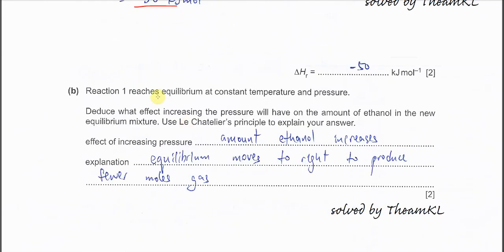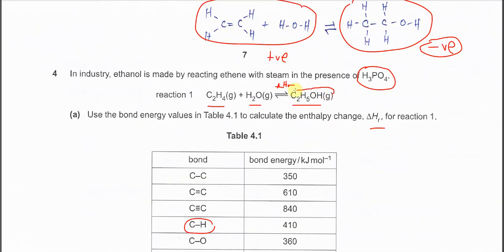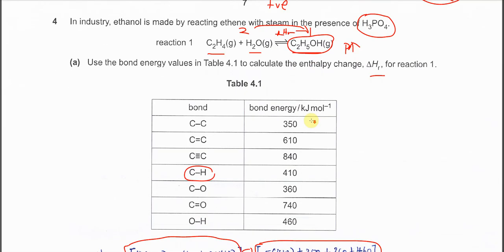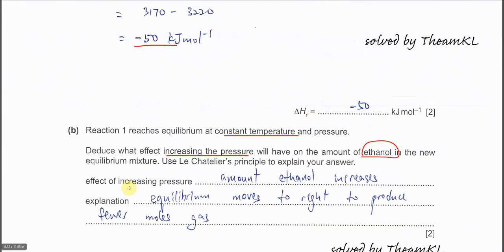Part B. Reaction 1 reaches equilibrium at constant temperature and pressure. We need to deduce the effect of increasing pressure on the amount of ethanol. Ethanol is a product — 1 mole on the right. The reactants total 2 moles on the left. When pressure increases, equilibrium shifts to the side that produces fewer moles of gas, which is the right side. So the amount of ethanol increases, because the equilibrium moves right to reduce the applied pressure.